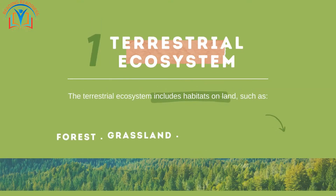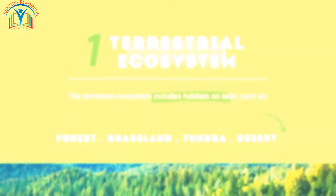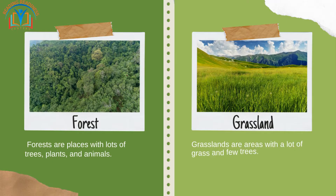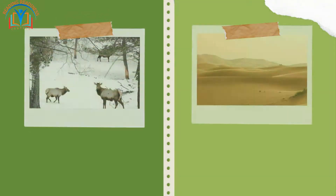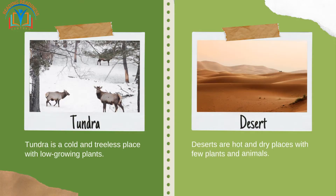The terrestrial ecosystem includes habitats on land such as forest, grassland, tundra, and desert. Forests are places with lots of trees, plants, and animals. Grasslands are areas with a lot of grass and few trees. Tundra is a cold and treeless place with low-growing plants. Deserts are hot and dry places with few plants and animals.